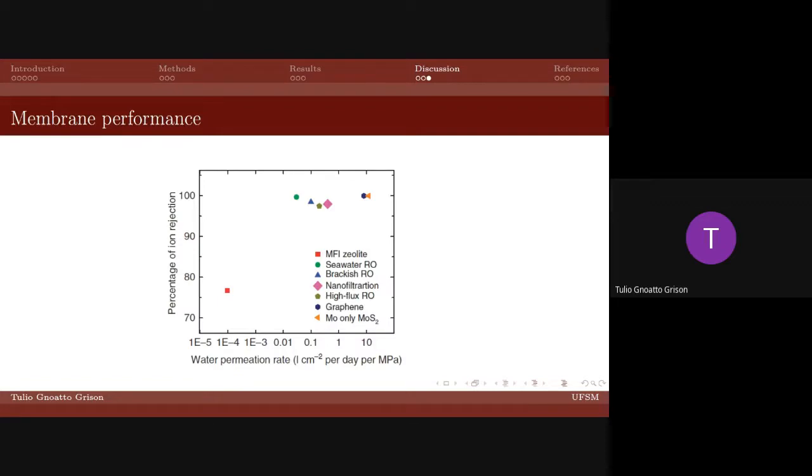This graph compares the performance of the membrane from the article I present with other membranes that are in industry or that have been the subject of other simulation studies. The y-axis represents the percentage of salt rejection.